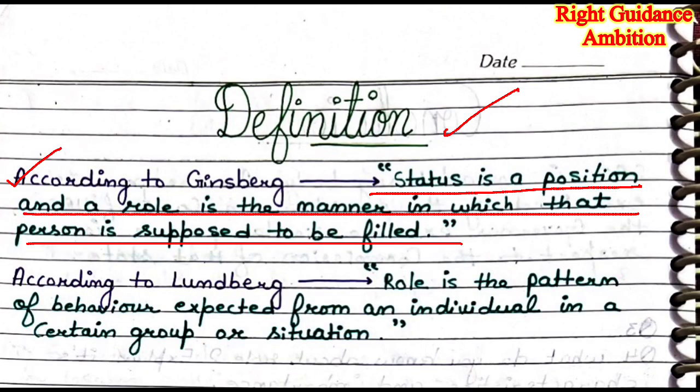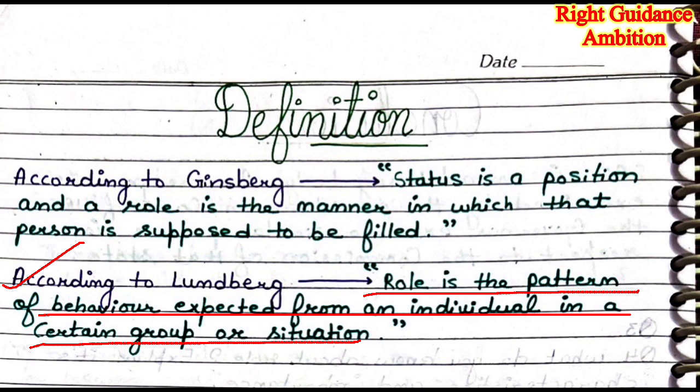Next is the definition. According to Ginzburg, status is a position and a role is the manner in which that person is supposed to fit — you have to perform the same functions in society. Second, according to Lernberg, role is the pattern of behavior expected from an individual in a certain group or situation — which expects from a person that they will behave in a particular situation or group.